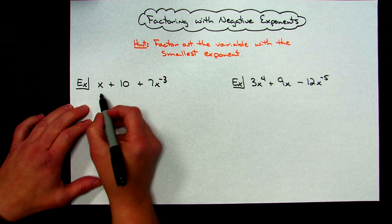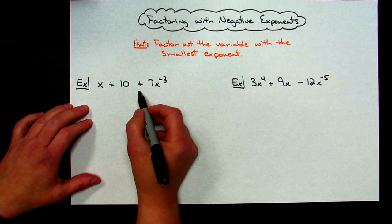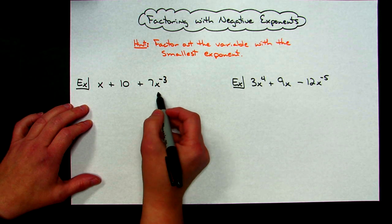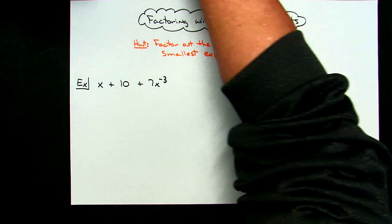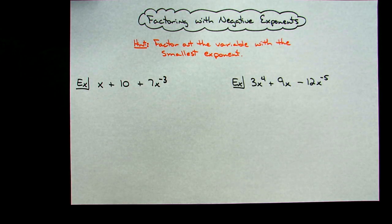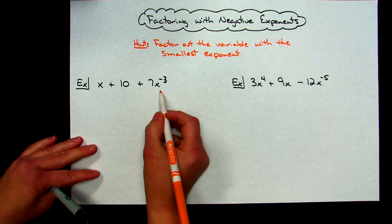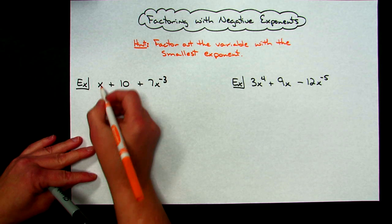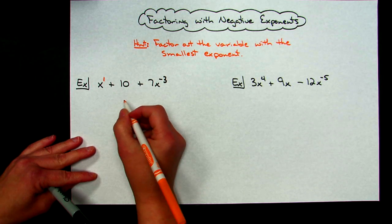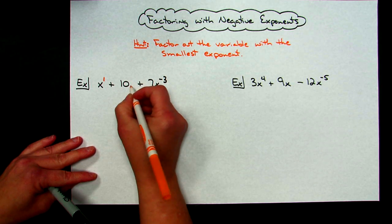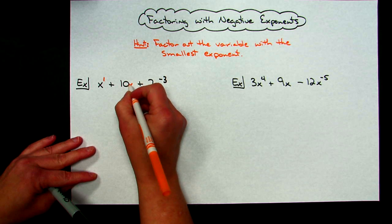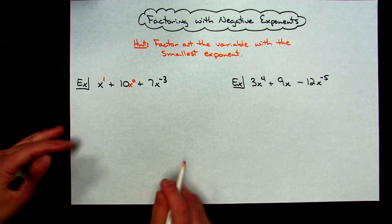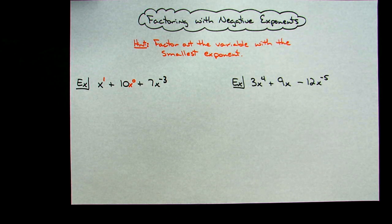So in this first example I've got x + 10 + 7x^(-3). Now let's fill in some extra things here. As you recall, a plain variable has a 1 exponent, and then a plain number would be x^0. So you can go ahead and put that in there so that you can clearly see all of your exponents and which one's going to be the smallest.